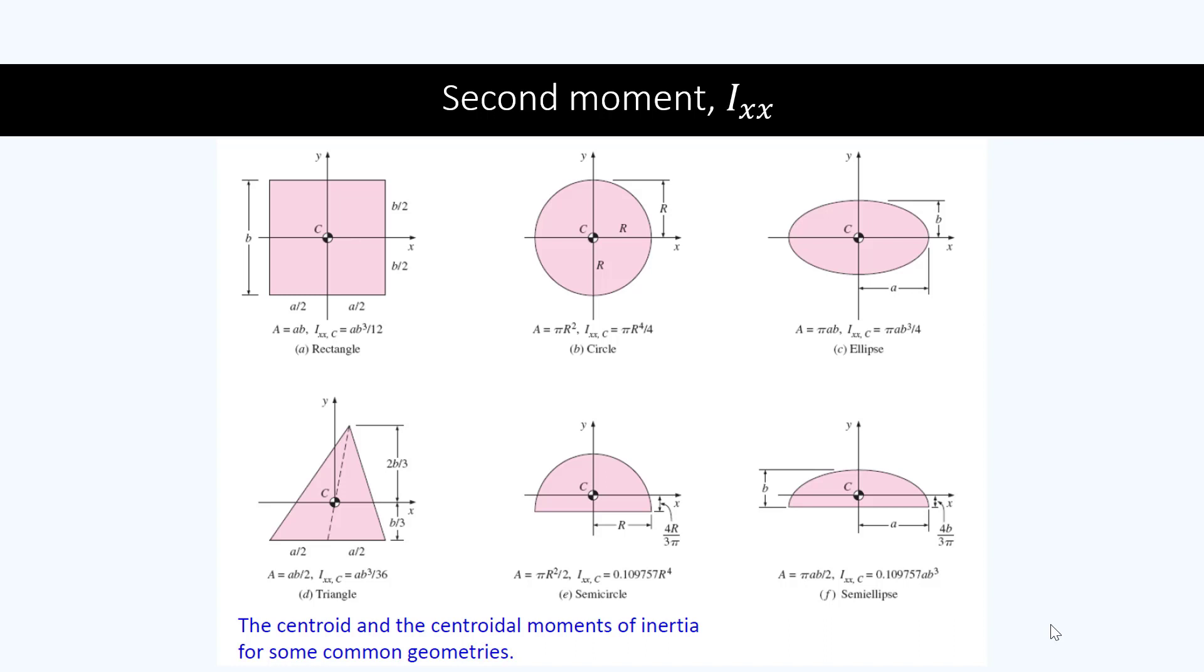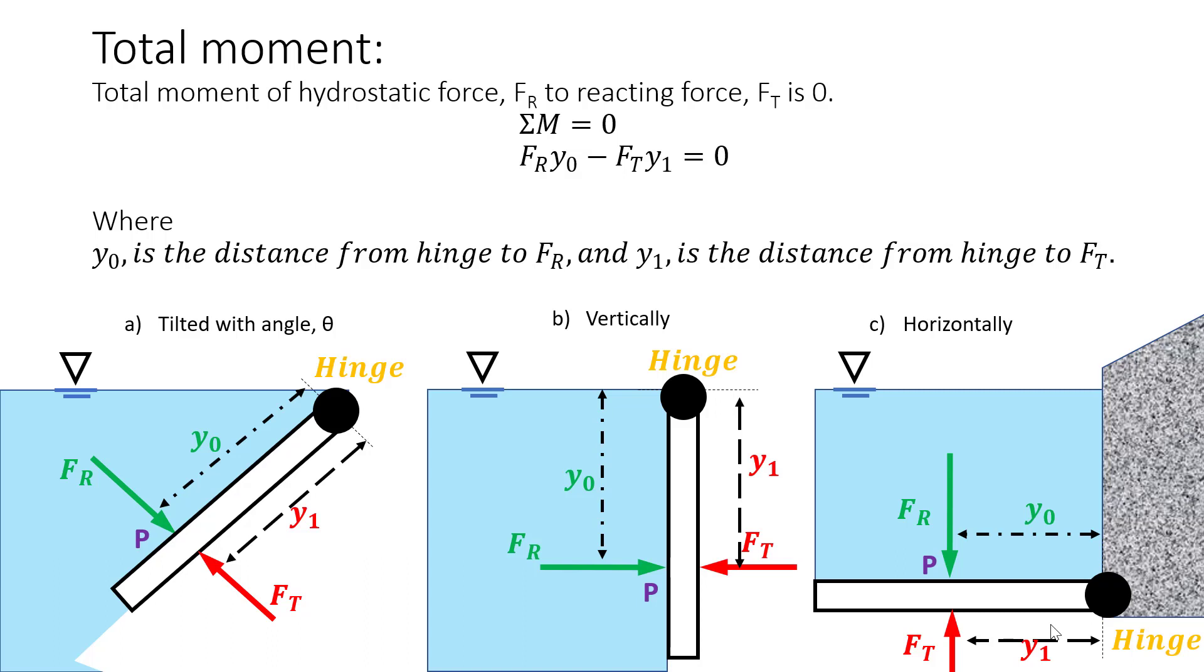And here is the centroid and moment of inertia of some common geometries. Please remember all these simple equations. Now let us look at moment in hydrostatic force. In hydrostatic force, moment is used when there is a problem related to hinge. The total moment on the plane surface is considered zero where the force is in equilibrium. As an example, the total moment of hydrostatic force FR to reacting force FT can be written as FR times Y0 minus FT times Y1 equal to zero, where Y0 is the distance from hinge to FR and Y1 is the distance from hinge to FT.